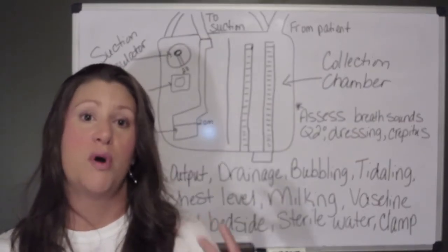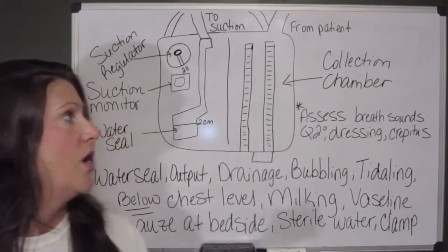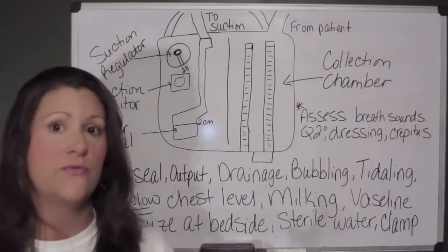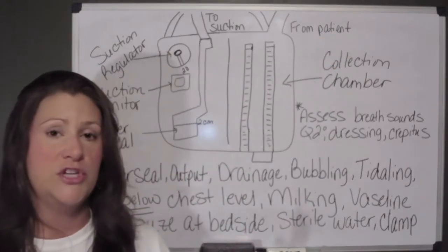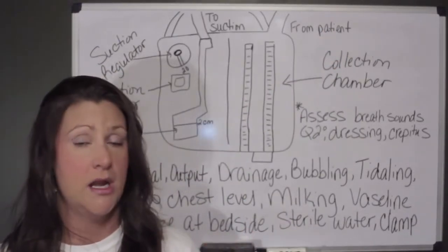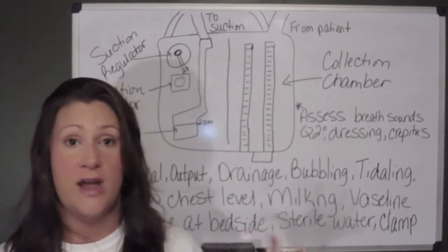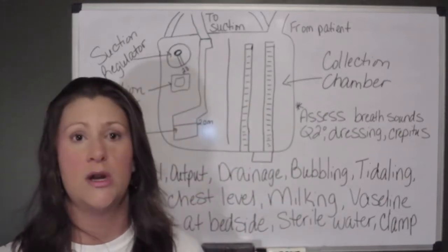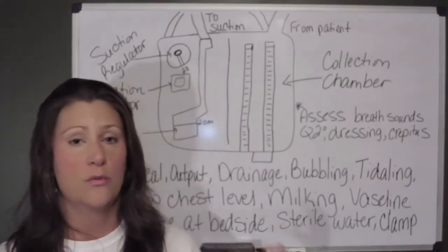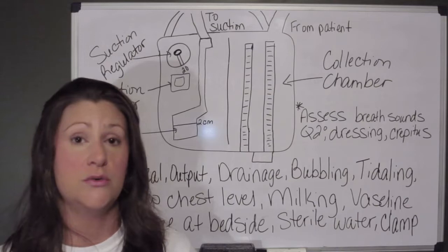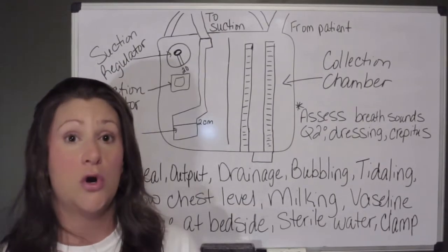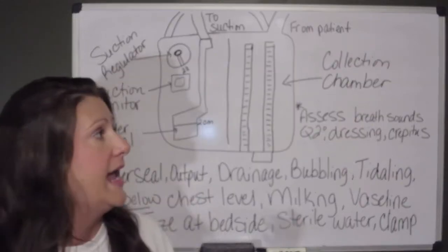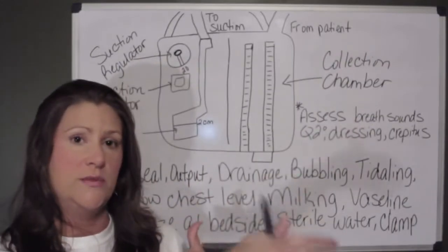Now I want to go right into talking about the different parts of the chest tube. Over here we have the actual tube — I've got that labeled — coming from the patient. The chest tube is really big. Your provider will choose which size chest tube the patient needs depending on what we're draining and what we're trying to accomplish. But they are large and they are painful going in. At the very tip of the chest tube you'll see little holes.